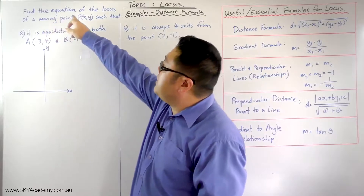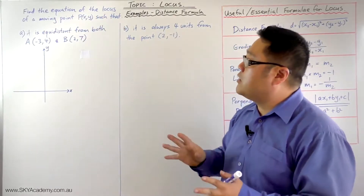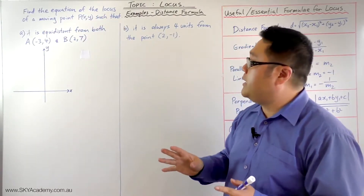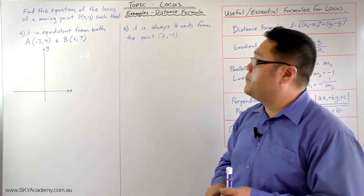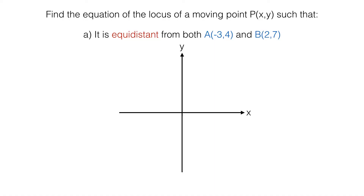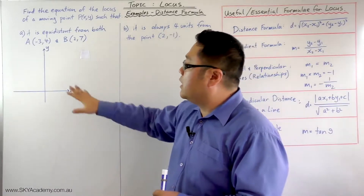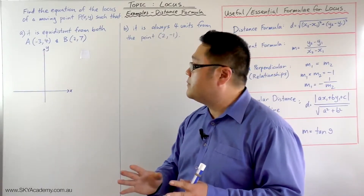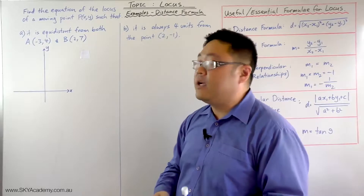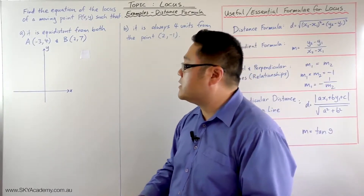So for example: find the equation of the locus of a moving point P, where the coordinates are x and y, such that it is equidistant from both point A, which is (-3, 4), and B, which has coordinates (2, 7). So let's plot that on a number plane first and then work out how we need to go about solving this.